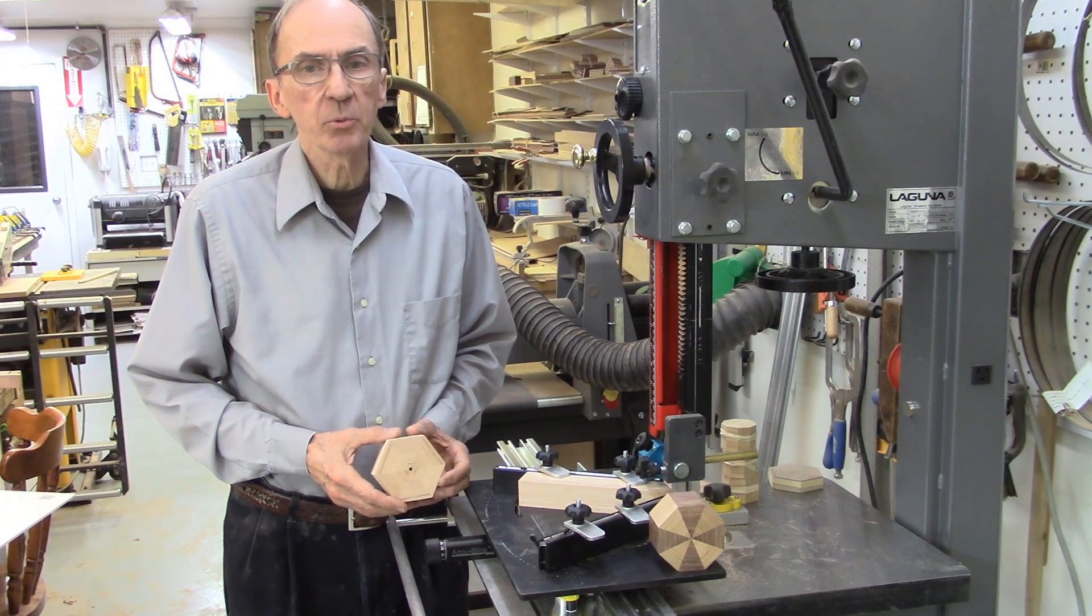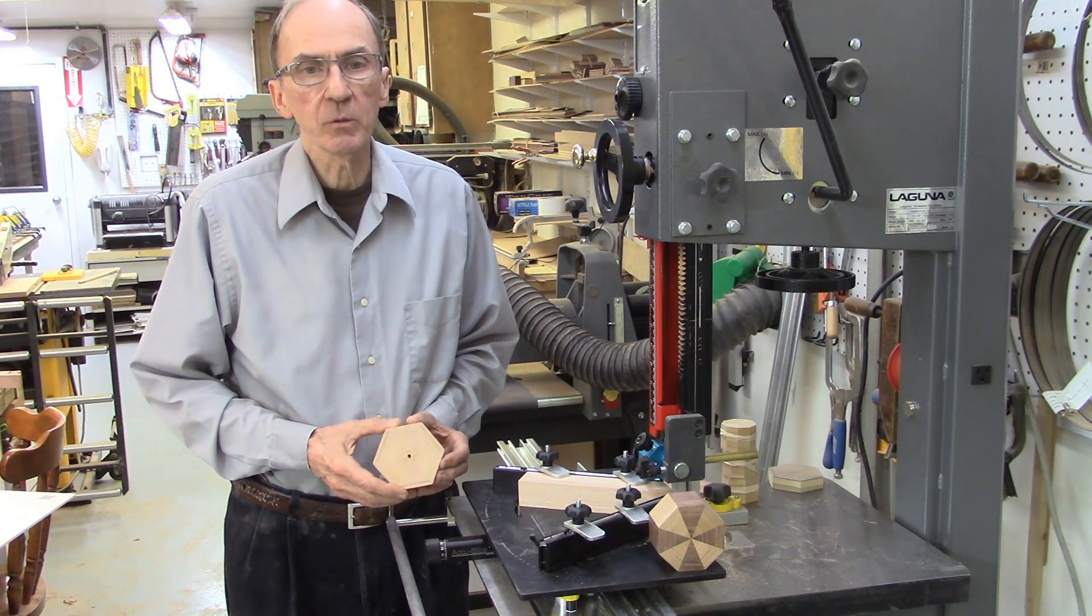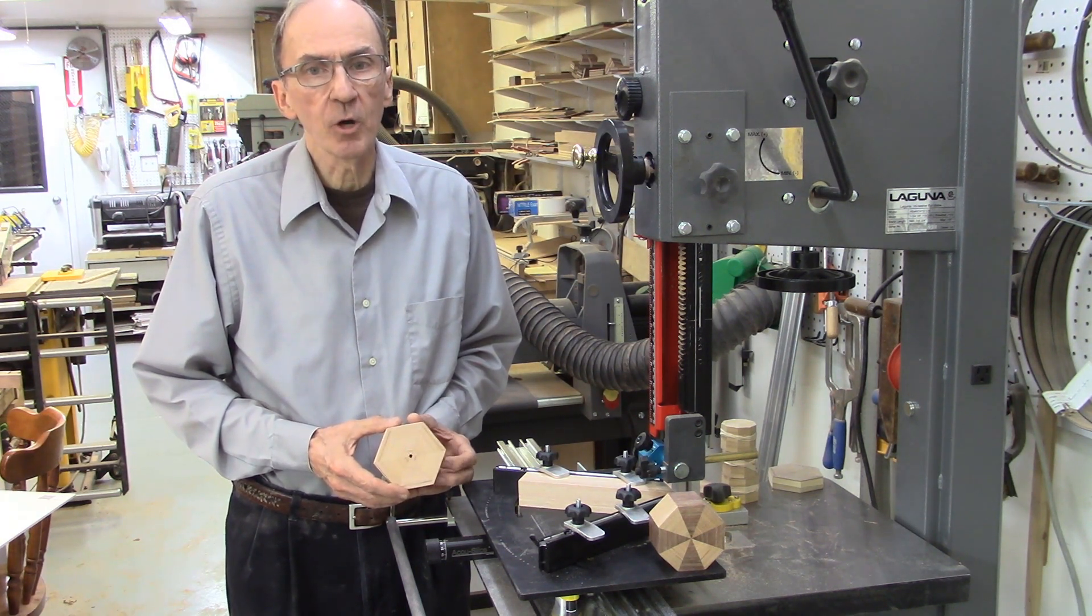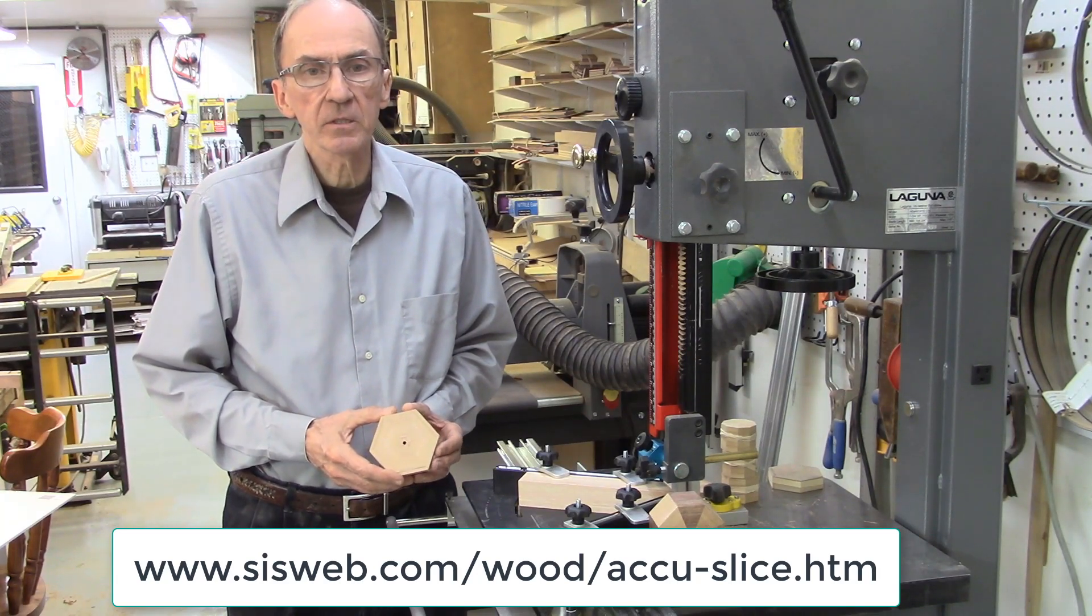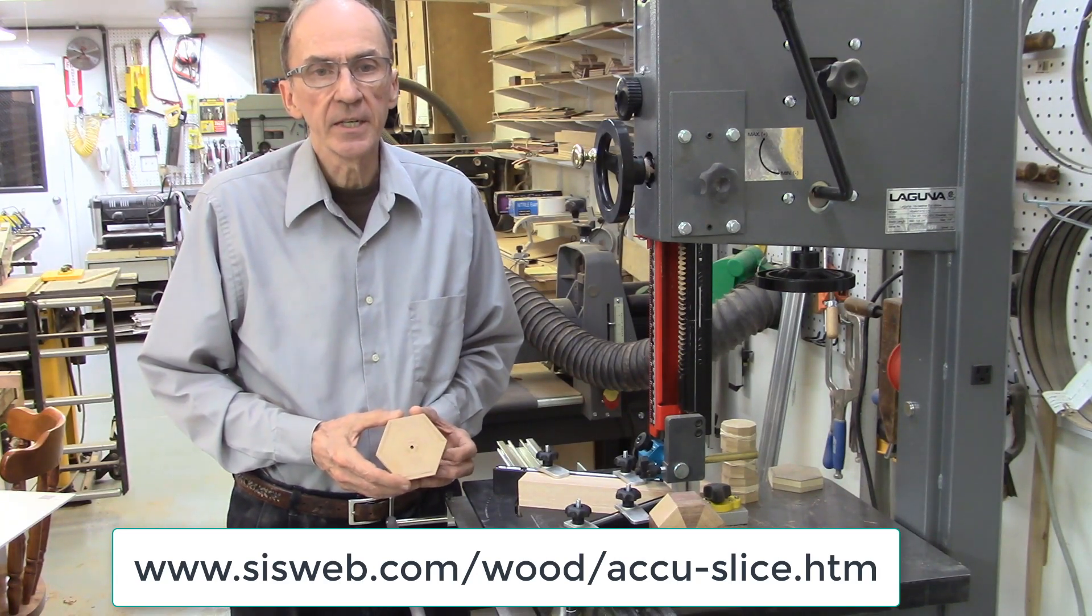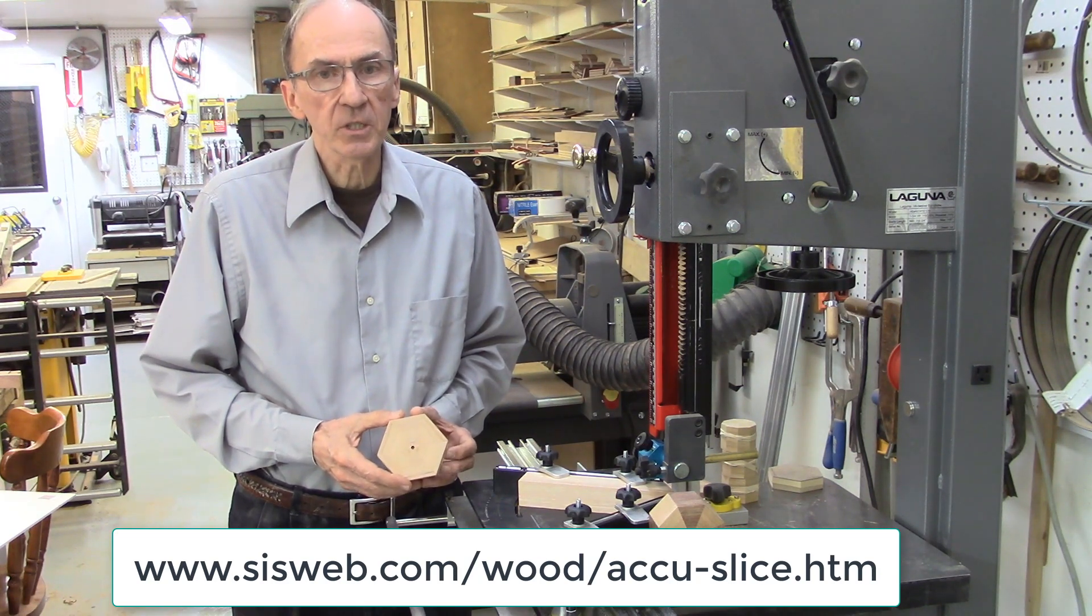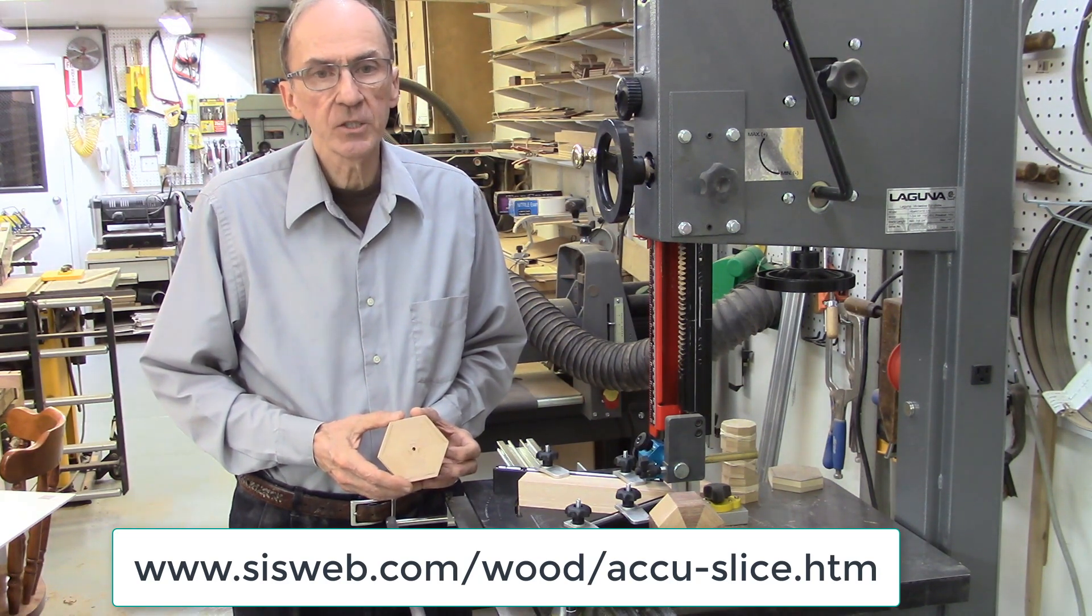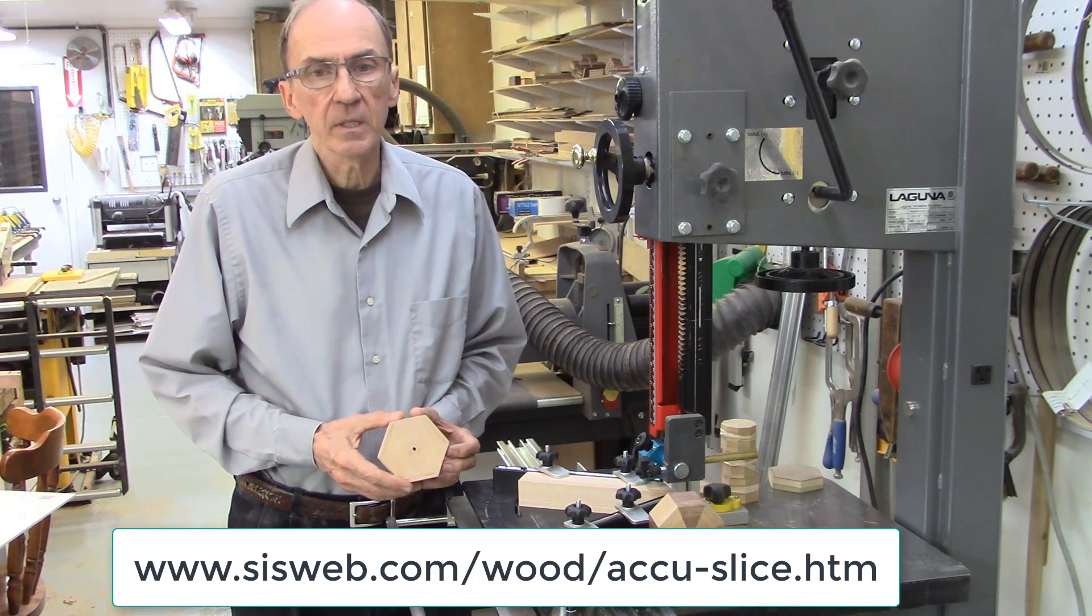As I stated earlier, this is a prototype version of the AccuWedge. The final commercial version of the AccuWedge is scheduled for production in the fall of 2017. Check out our website for the updates on the availability of the AccuWedge and the other new additions to the AccuSlice family. This includes the AccuSlot, a Celtic Ring carriage, and the AccuSled, a flat plate carriage for custom cuts on the bandsaw.